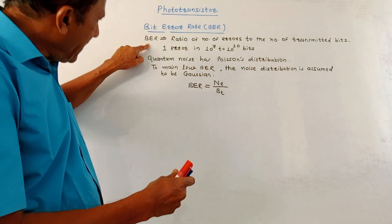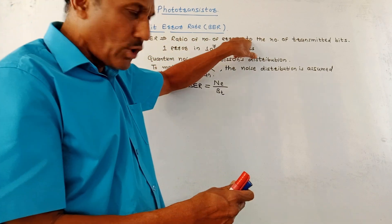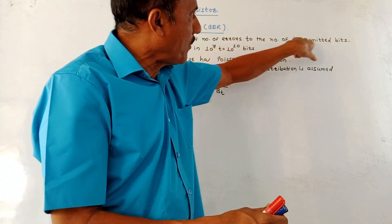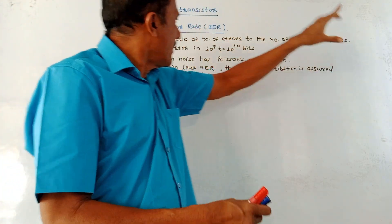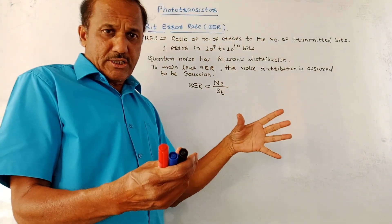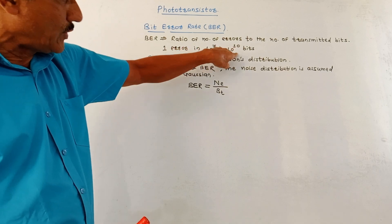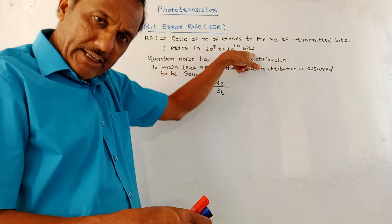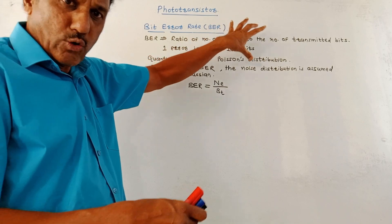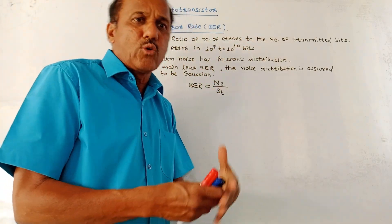Basically, BER bit error rate is the ratio of number of errors to the number of transmitted bits. Now, in optical communication, in case of fiber optical cable, one error in 10 to the 7 up to 10 to the 10 bits is allowed. This much error is allowed. You can say this much margin is allowed.